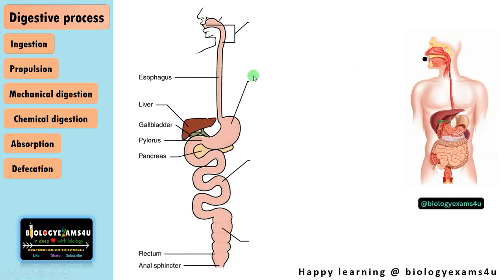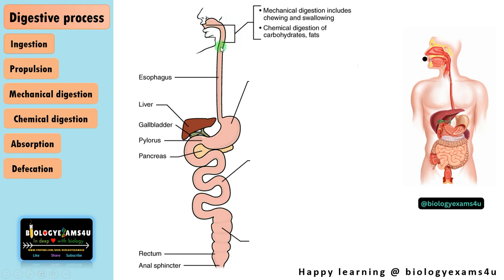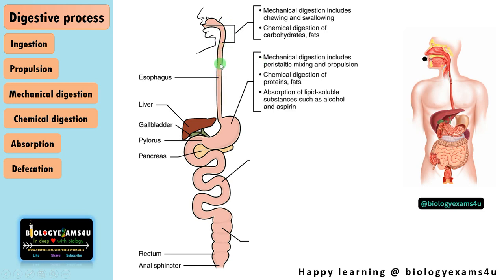To summarize: ingestion happens through the mouth where mechanical digestion — chewing and swallowing — and chemical digestion of carbohydrates and fats by salivary amylase and lingual lipase takes place. Food is then pushed into the esophagus as a bolus, with further mechanical digestion by peristaltic movement and mixing. In the stomach, chemical digestion of proteins and fats occurs along with absorption of lipid-soluble substances such as alcohol and aspirin.